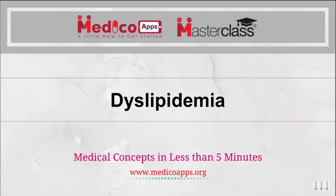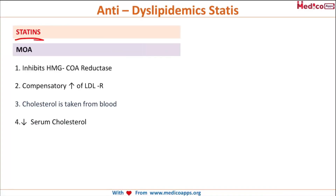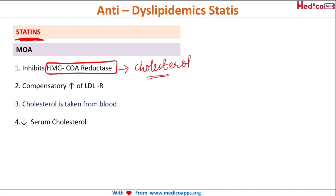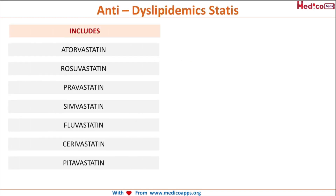We'll be learning about the drugs used in dyslipidemia. The first ones are the statins. Their mechanism of action is mainly inhibiting HMG-CoA reductase, which is a very important rate-limiting enzyme in the synthesis of cholesterol. Inhibiting this enzyme produces an anti-dyslipidemic effect. Statins also increase the number of LDL receptors, so cholesterol is taken away from the blood, reducing serum cholesterol. The statin drugs include atorvastatin, rosuvastatin, pravastatin, simvastatin, fluvastatin, cerivastatin, and pitavastatin.